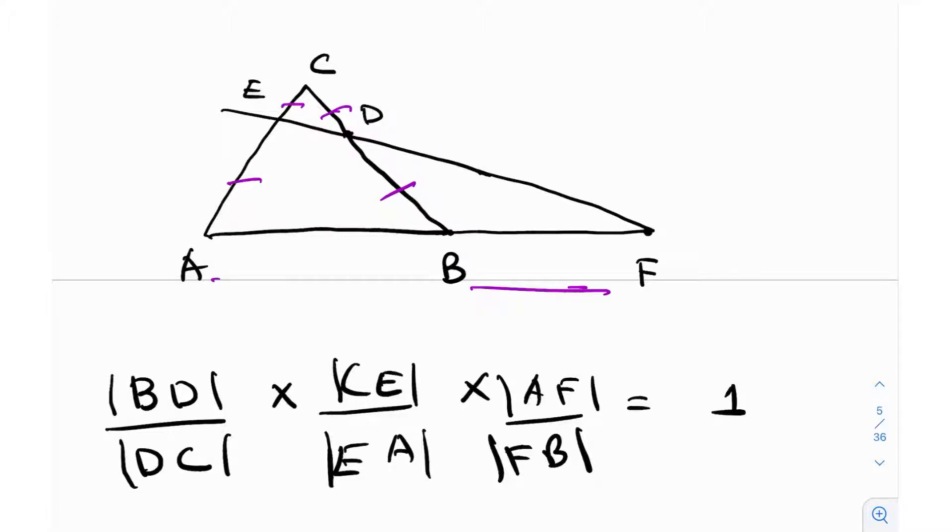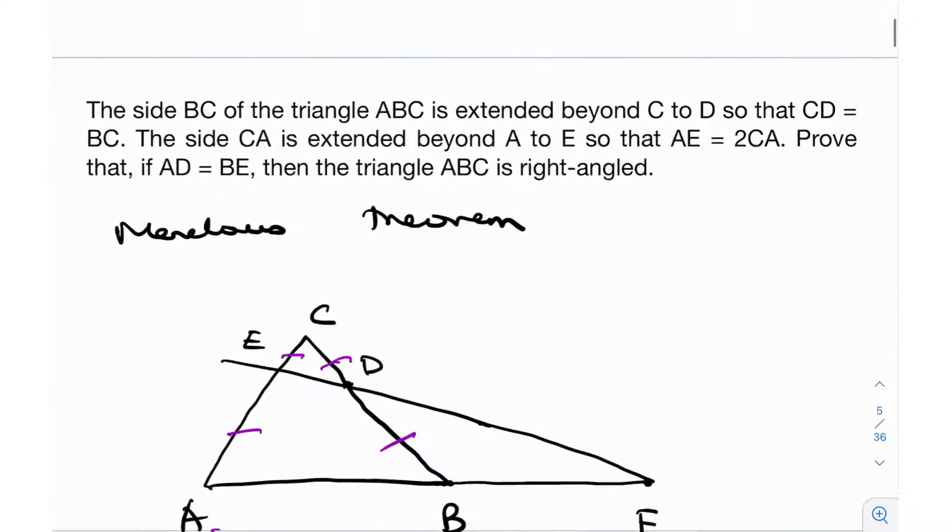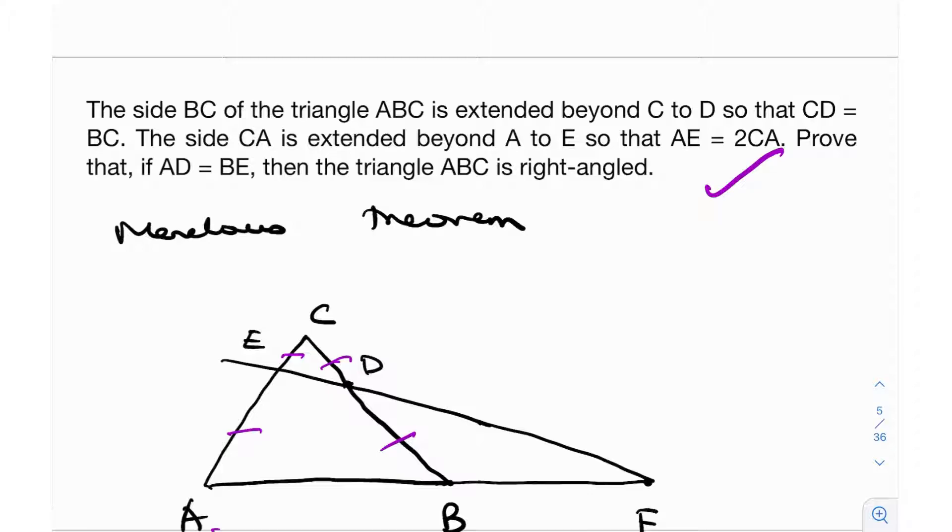So this is what Menelaus theorem is, and now we're going to see how we can use this to this problem. It's actually a pretty straightforward usage if you can see that. But now that we've discussed Menelaus theorem, maybe just try drawing the figure on your own. Maybe just think about a little bit how Menelaus theorem can be used. But okay, let me just draw the figure over here. It's saying that the side BC of the triangle ABC, right, so let's say we have the triangle ABC like this.